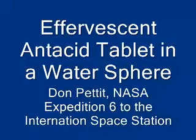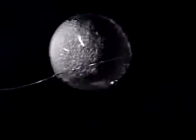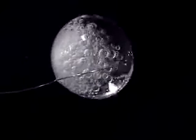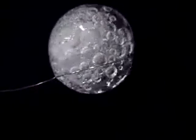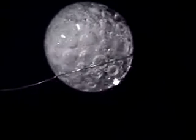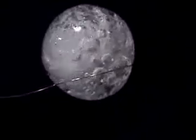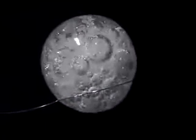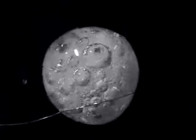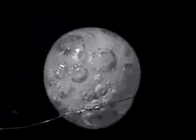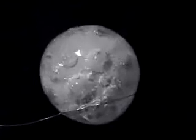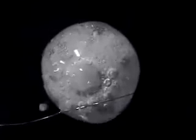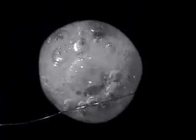Effervescent antacid tablet in a water sphere. Here's a sphere of water, 50 millimeters in diameter, with an effervescent antacid tablet. Bubbles form rapidly from a chemical reaction. This is an example of heterogeneous nucleation, where bubbles form on a solid surface and can get a momentum exchange and travel out into the fluid.